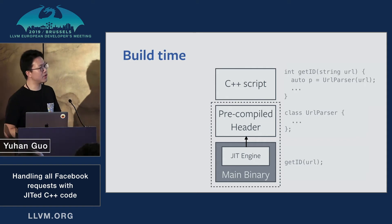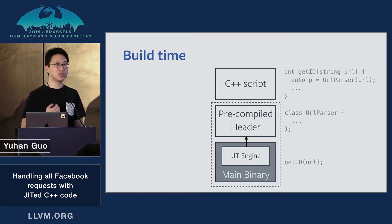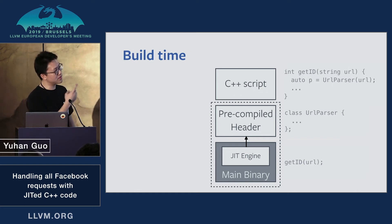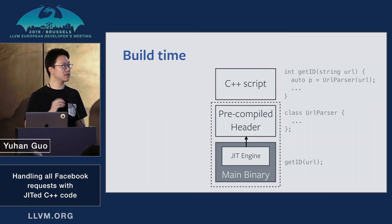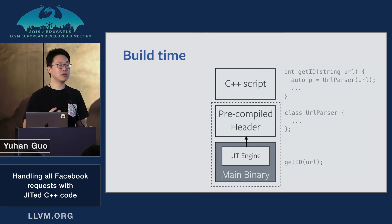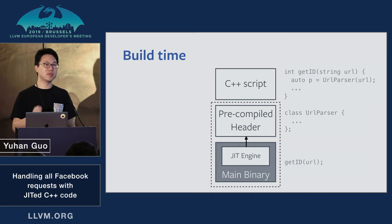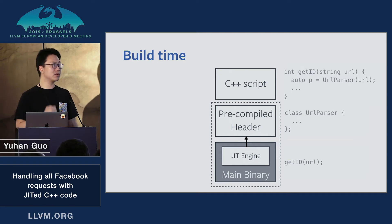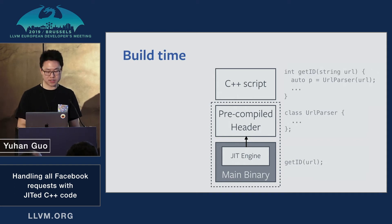The pre-compiled header and the main binary are bundled together because both were produced at build time, while the C++ script is consumed at runtime. So essentially we ship the stable binary and PCH to all the servers, and the script can be iterated on quickly. We also have limited support for hot-reloading scripts, meaning you can ship a new script to a production server and without restarting the main binary, it can pick up the latest script and execute the latest functionality.